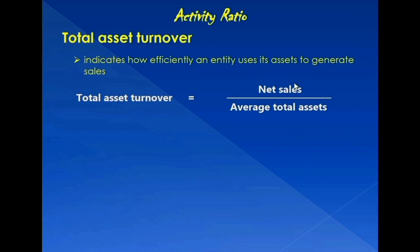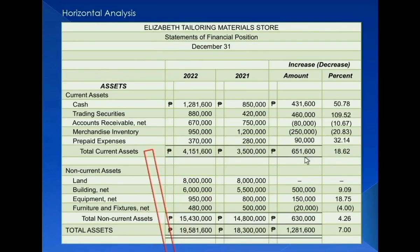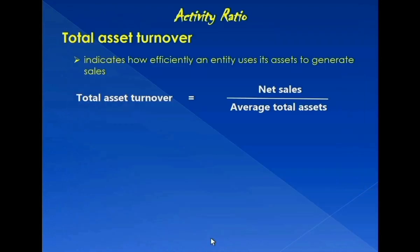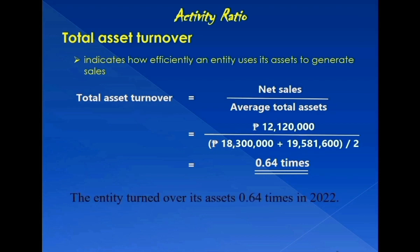Using the formula, let's pick up the appropriate figures from the financial statements of Elizabeth Tayloring. Net sales during 2022 totaled $12,120,000. The beginning balance of total assets was $18,300,000 and the ending balance was $19,581,600. Therefore, the total asset turnover is 0.64 times — the entity turned over its assets 0.64 times in 2022. Generally, the higher the total asset turnover, the more efficiently the entity's assets have been used.